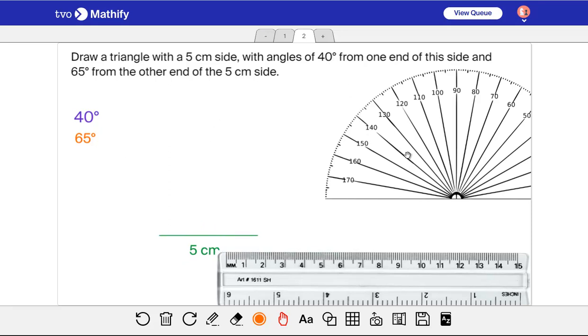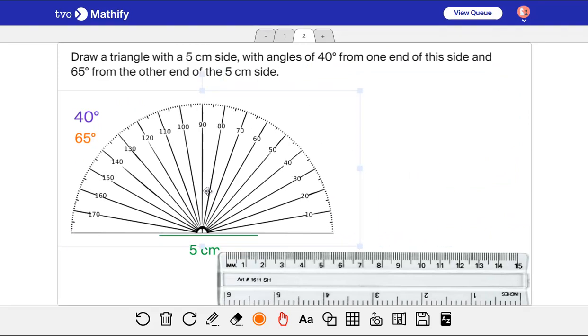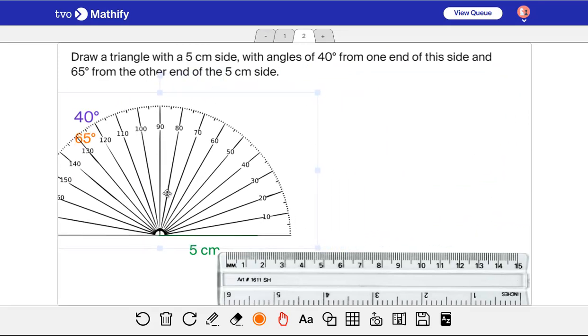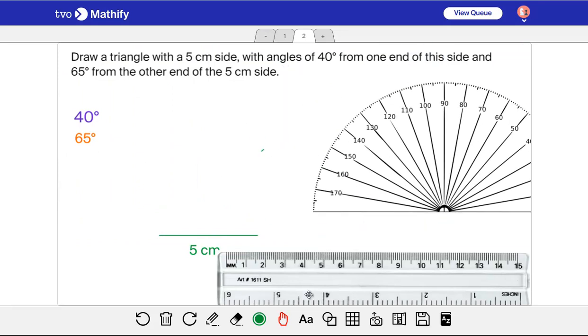So let's do the 40 degree angle. I'm going to put my protractor so that the center of the protractor is right on one end of that. You see, here's that side of the triangle lies right on the zero line here. So this would be 40 degrees here. So I'm going to make a little mark right there. And let's move this protractor off. I'm going to draw a line from that end through that point. So that's going to be my 40 degree angle right down here.